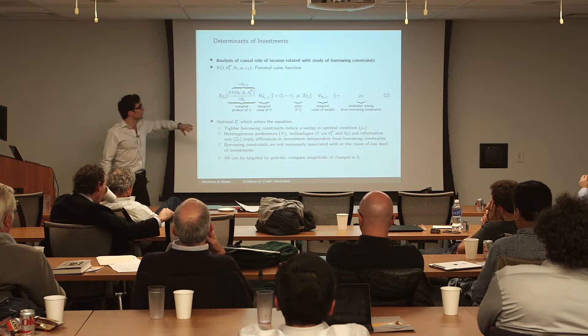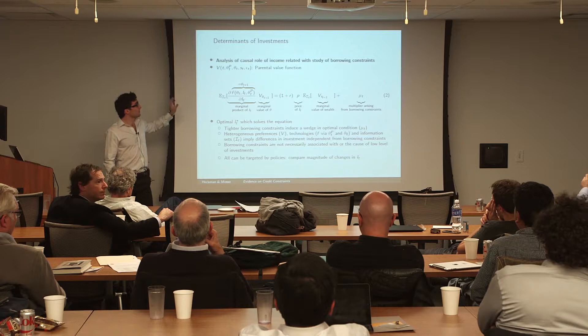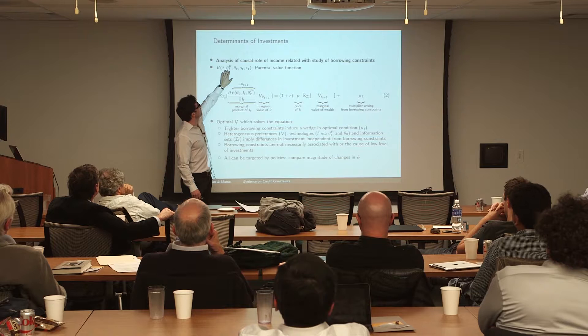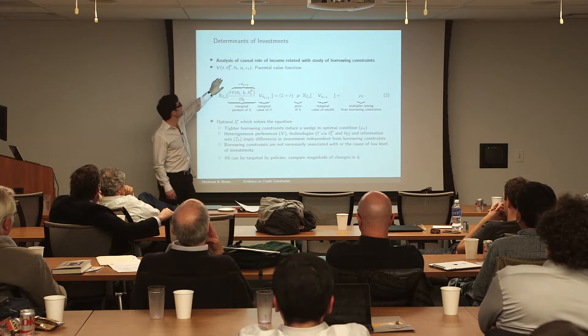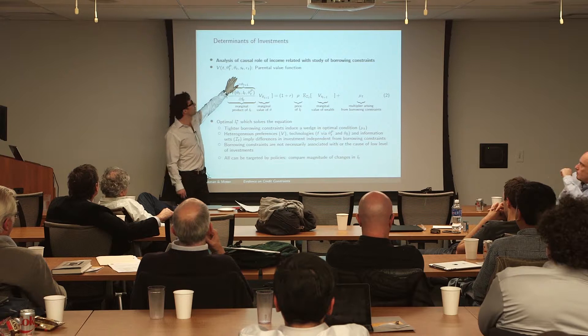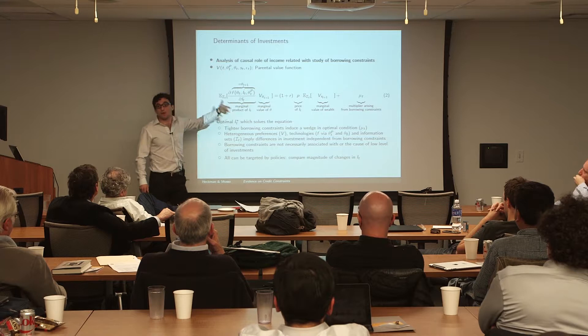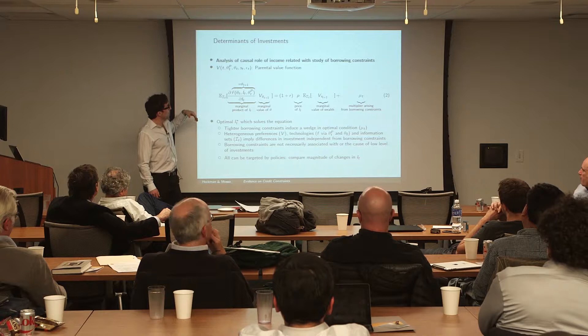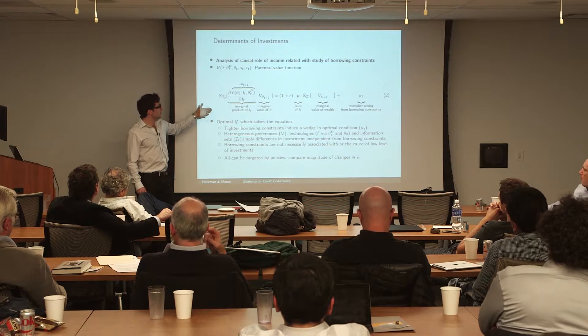I use one equation — the first-order condition for a parent's problem over T periods. The value function of the parent depends on time, since it's a finite horizon problem. It depends on parental human capital, the current level of skill for the child — which for period zero could be thought of as genetic endowment — and the current amount of wealth and income. The first-order condition for investment shows a component that is simply the marginal product of investment in producing skills in the next period, which can depend on parental abilities.